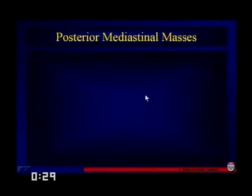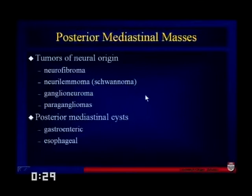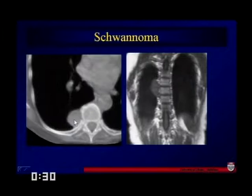Wrapping up in terms of the posterior mediastinum, most of these things are going to be neural in origin. Sometimes they may be associated with the esophagus, or we might see extramedullary hematopoiesis. This is a case of a posterior mediastinal mass — neural in origin, a schwannoma. You can see on both MR and CT that it's in the paraspinous area.